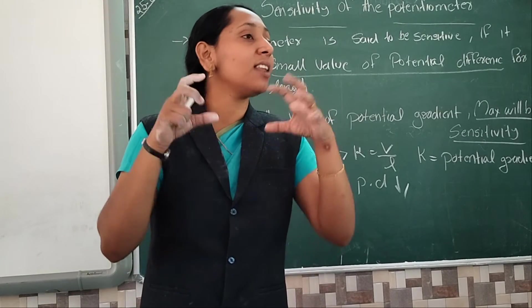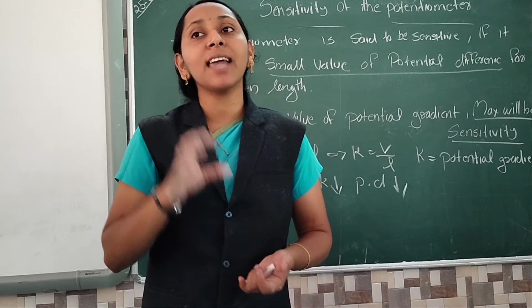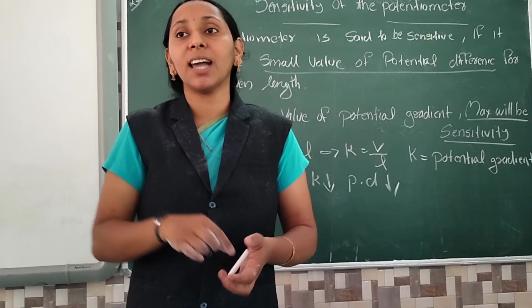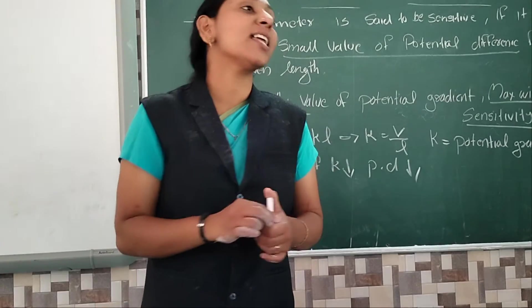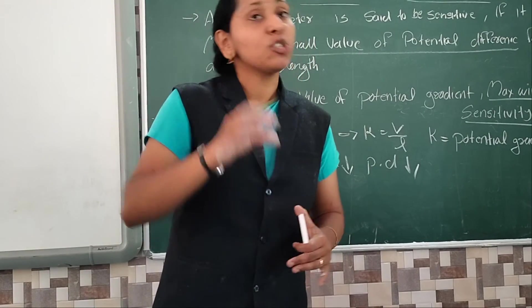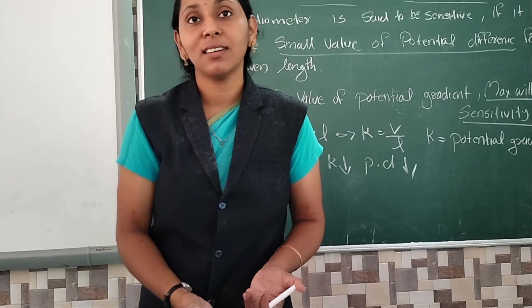So K value is least, potentiometer sensitivity is maximum. So aap loko kya chahiye? K value jada chahiye ke or less chahiye ke? Less. K value is less, potential gradient hum loko less chahiye. So very small values also the potentiometer can measure it. Clear everyone.